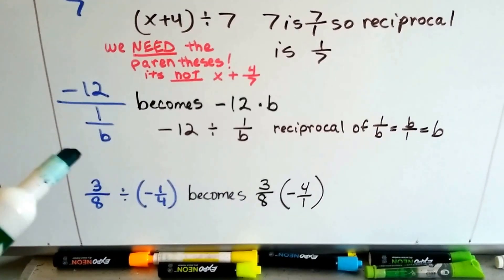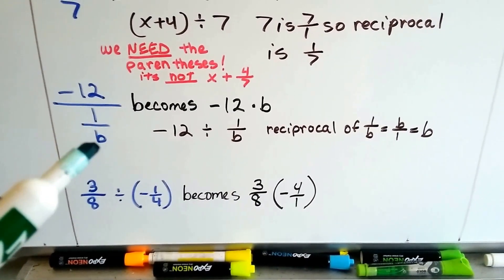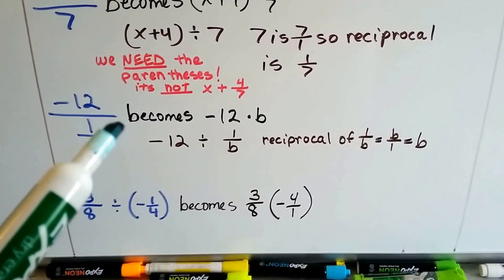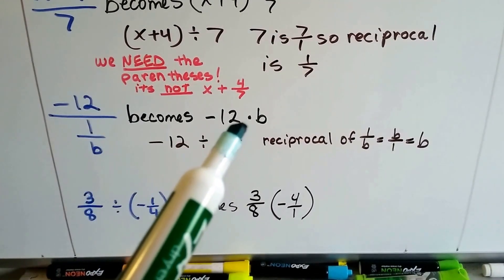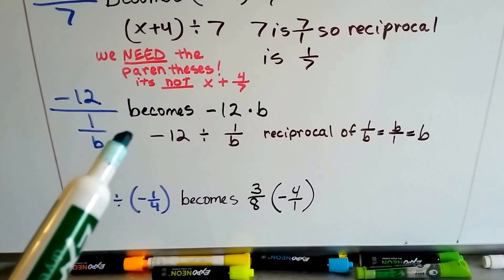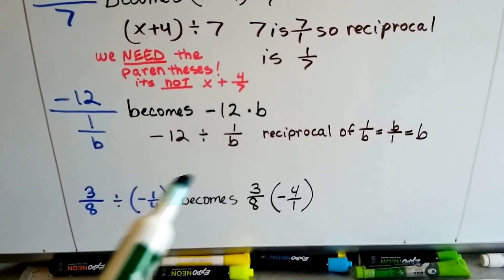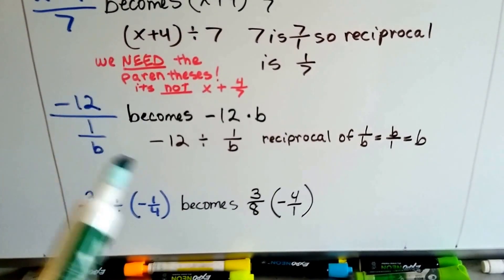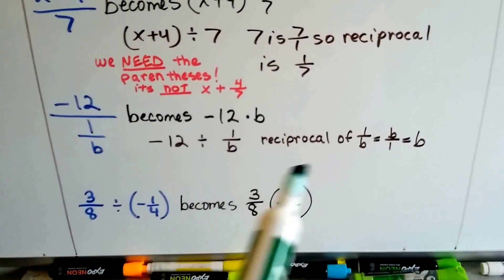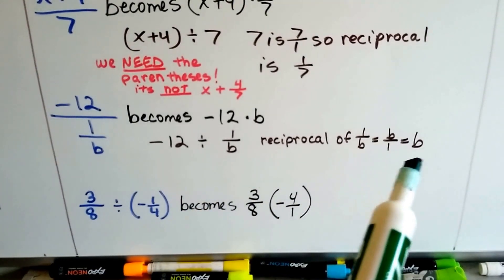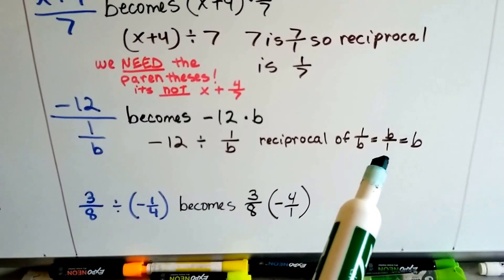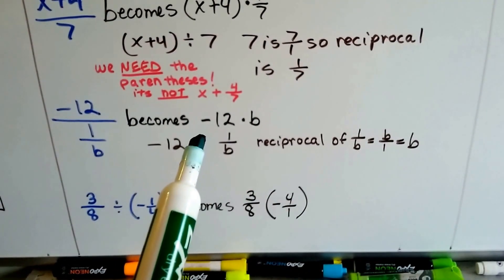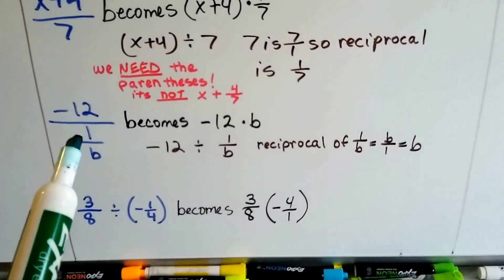What if we have a negative 12 over 1 over b? And yeah, you can have a fraction of a fraction. Well, this is going to become negative 12 times b. This means negative 12 divided by 1 over b. That's what this means. It's a division problem. The reciprocal of 1 over b would be b over 1. Well, b over 1 is b. It would be like 5 over 1 would be 5. So now we just end up with a multiplication problem of negative 12 times b.